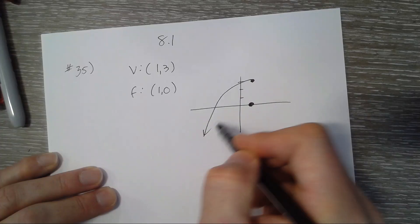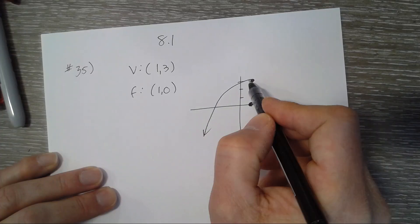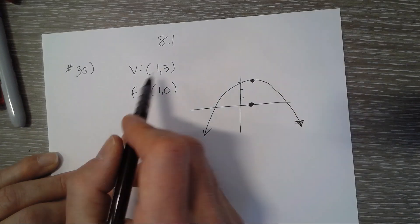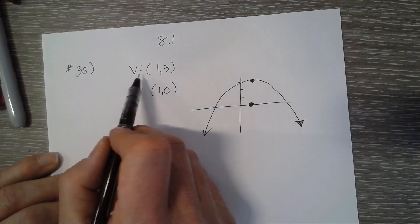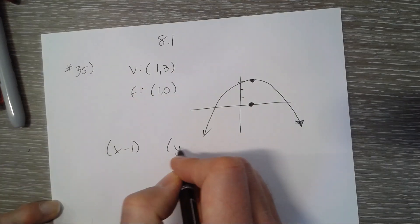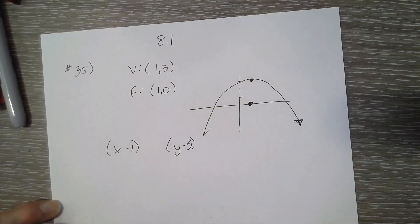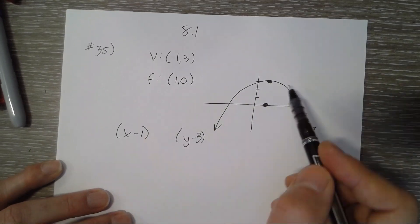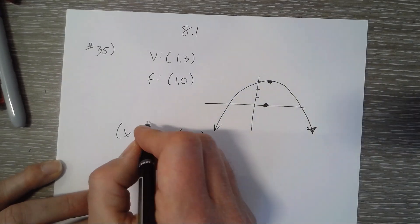We know that the vertex is (1,3), so it's going to be (x minus 1) and (y minus 3). We know that x is being squared because it opens up and down, so the 4p is on this side of the equation, on the non-squared side.